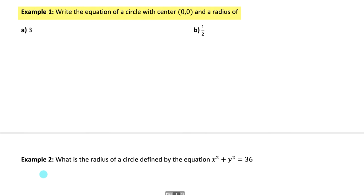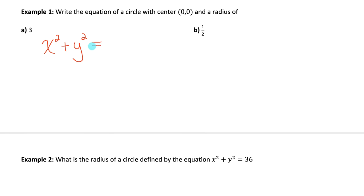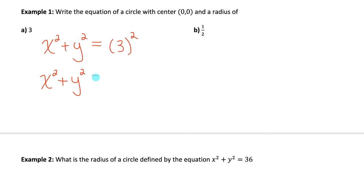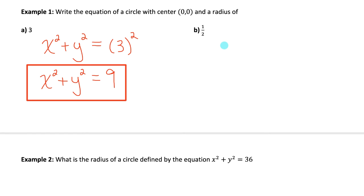Example one: write the equation of a circle with center (0, 0) and a radius of 3. When we write the equation of a circle centered at the origin, we use the format x squared plus y squared equals the radius squared. The radius is 3, so we write 3 squared, and we simplify: the equation of this circle is x squared plus y squared equals 9.